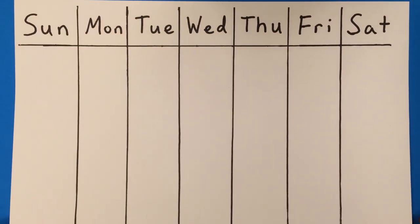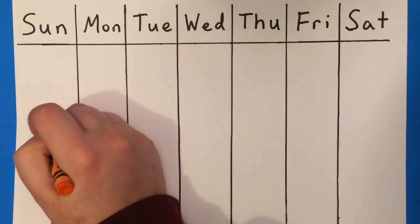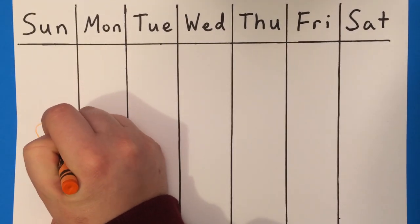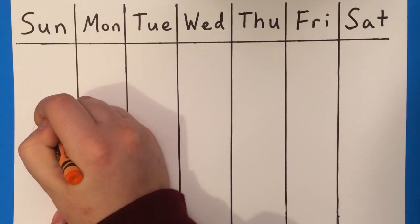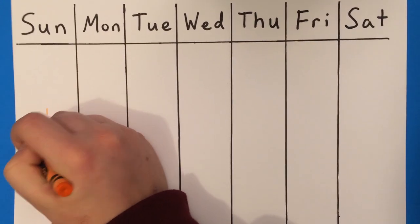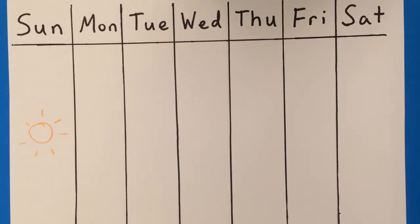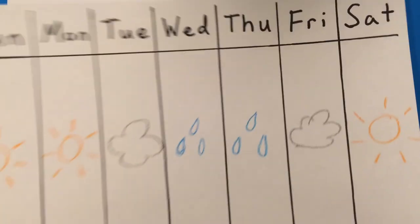Or you could use a calendar. Each day, the child can draw a symbol for that day's weather. For example, on Sunday it was sunny. Then at the end of the week, you can talk about the entire week's weather.